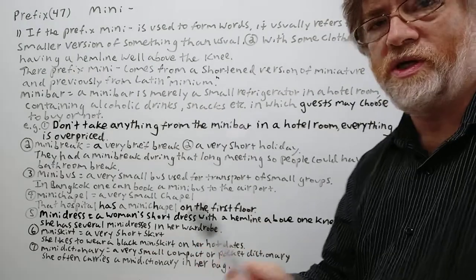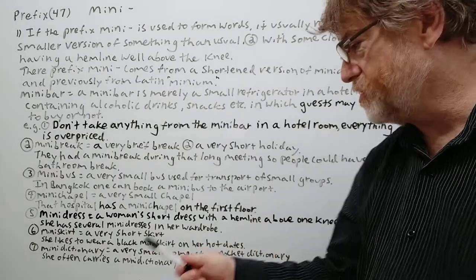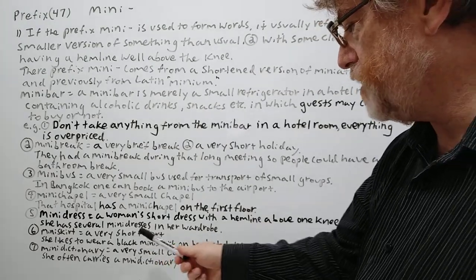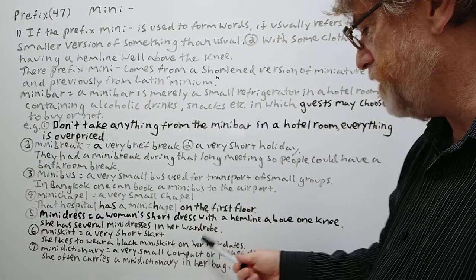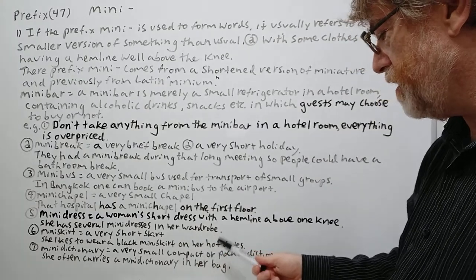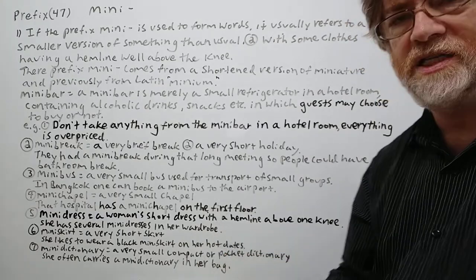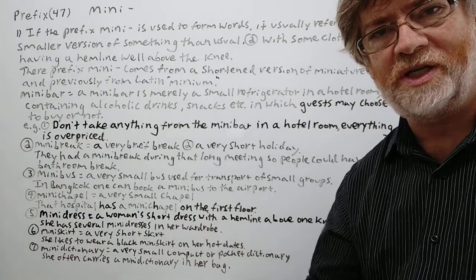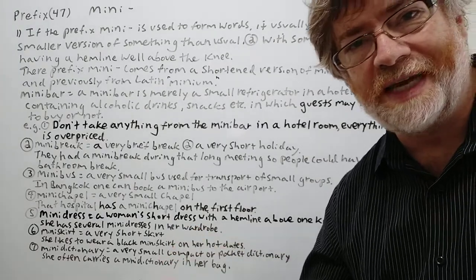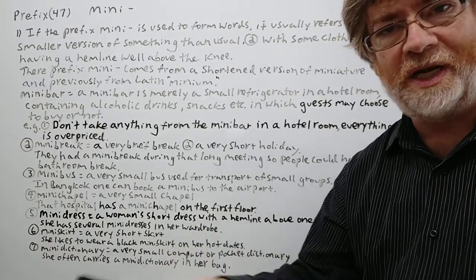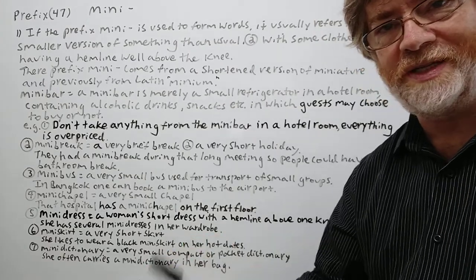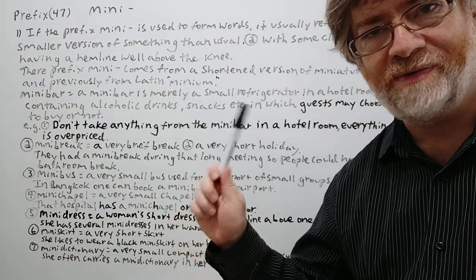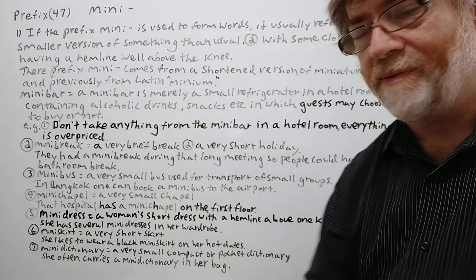Mini skirt — a very short skirt; probably the most common example here. Example: She likes to wear a black mini skirt on her hot date. Maybe if she's got a date with somebody and she wants to look very sexy, she'll pull out the mini skirt for that date she wants to go well.